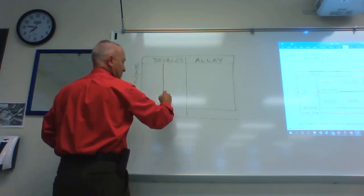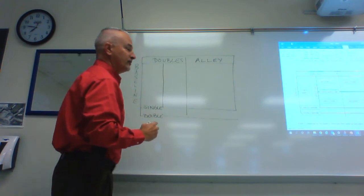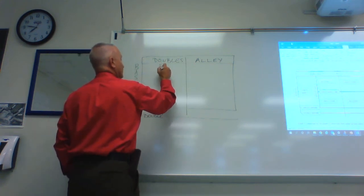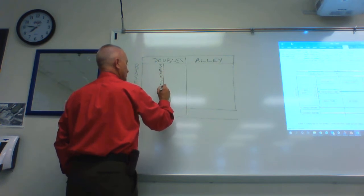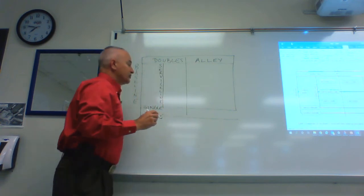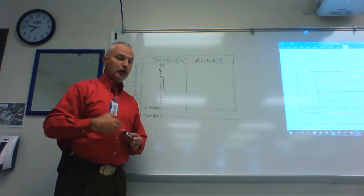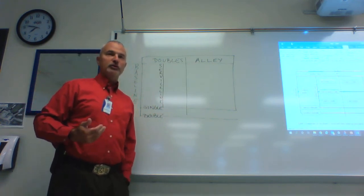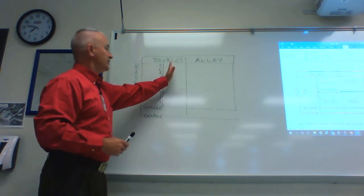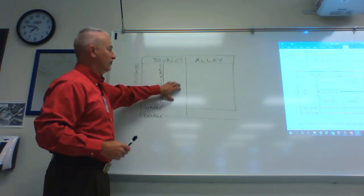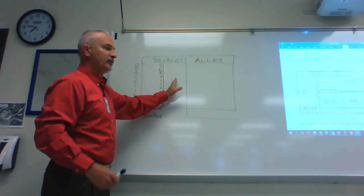There's a line that comes across just like this, and this is called the service line. When you serve the ball, when your opponent serves the ball to you, the ball must land in the front area of the court first, in front of the service line.